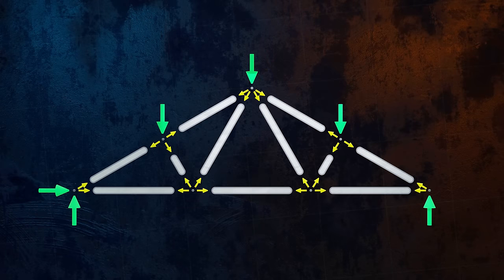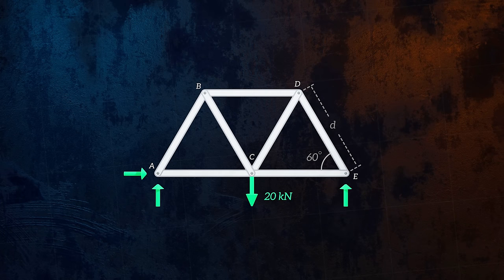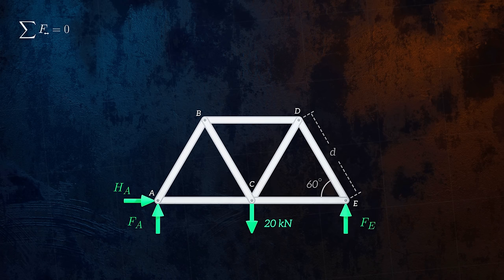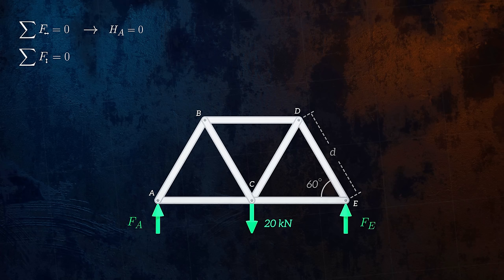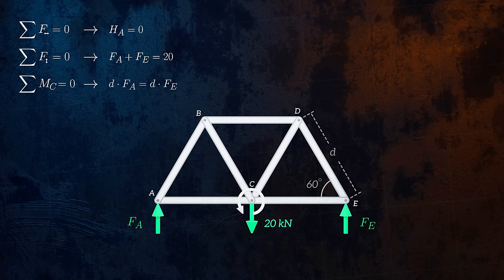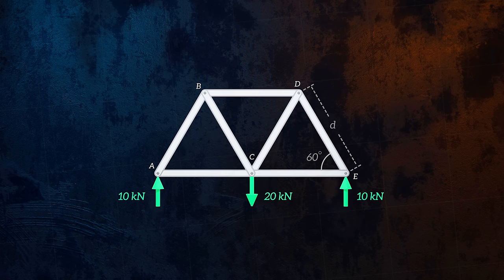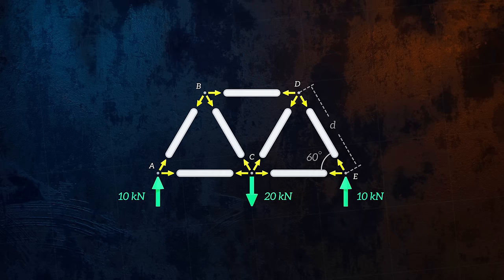Let's work through an example for a slightly simpler truss. First, let's draw the free body diagram and determine the reaction forces using our three equilibrium equations. Taking equilibrium of the horizontal forces, the horizontal force at joint A must be equal to zero, because it is the only force in the horizontal direction. Taking equilibrium of the vertical forces, the reaction forces at joints A and E must sum up to 20 kN. Both joints are located at the same distance from joint C, so taking equilibrium of moments about joint C, we can calculate that they both equal 10 kN. Since we don't know yet which members are in tension and which are in compression, it's easiest to assume that all of the members are in tension, so we'll draw the internal forces as pointing away from each joint. If we end up with negative values, it just means the member is actually in compression.